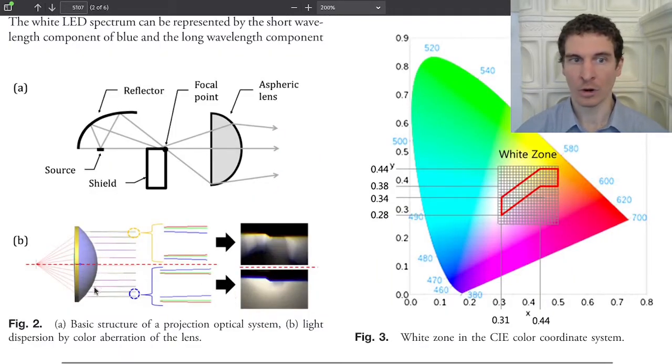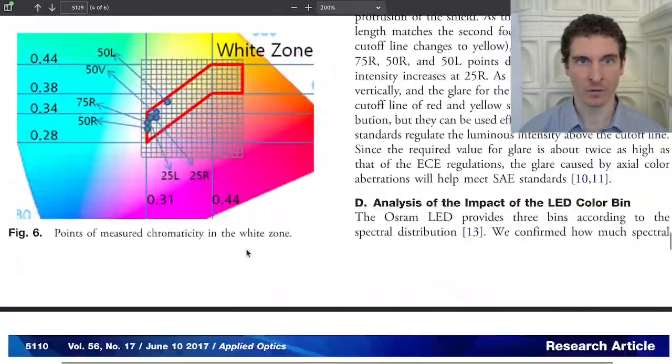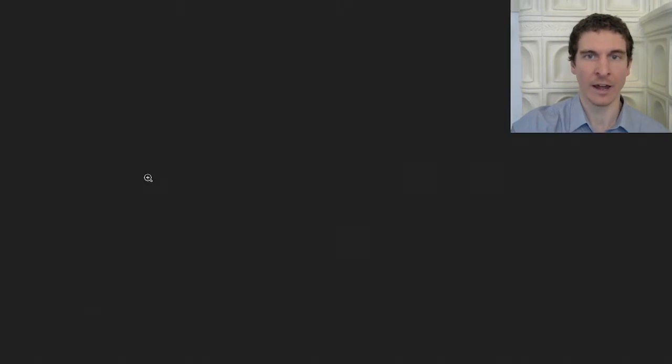Furthermore, modern plastic projector headlights have a higher tendency to separate colors within the beam pattern, and that leads to a greater deviation of colors, so some parts of the beam are going to be more likely to go outside of the allowable white zone, thereby contributing further to glare.